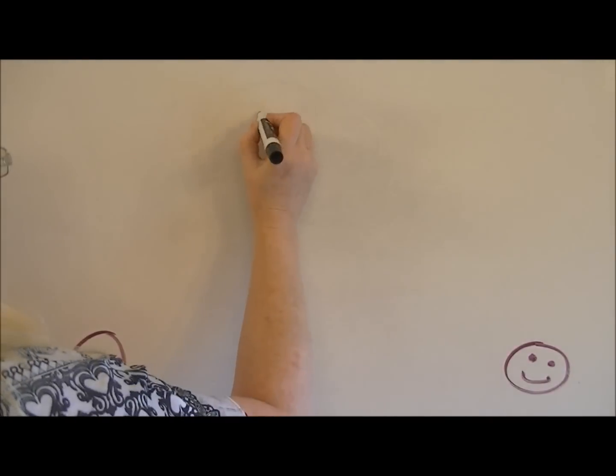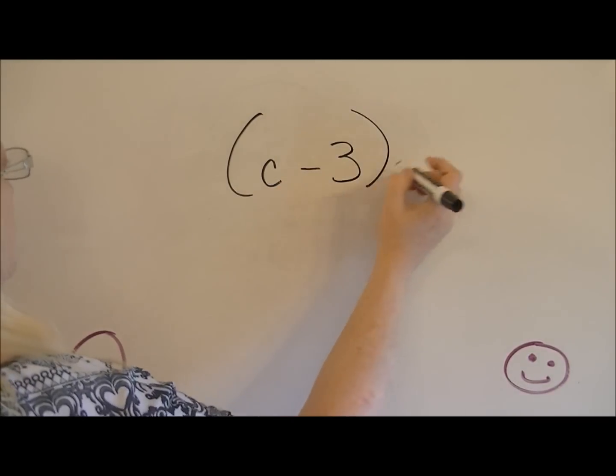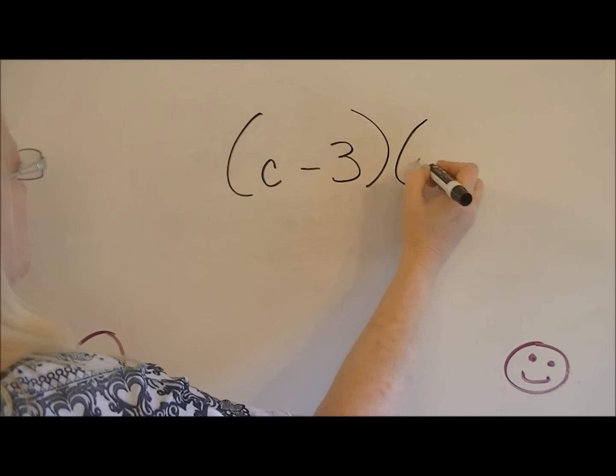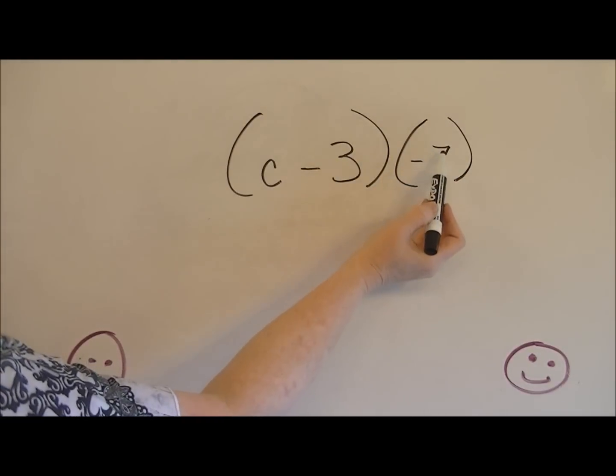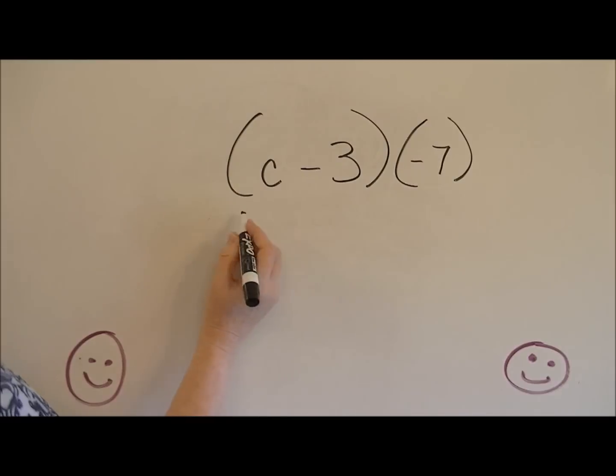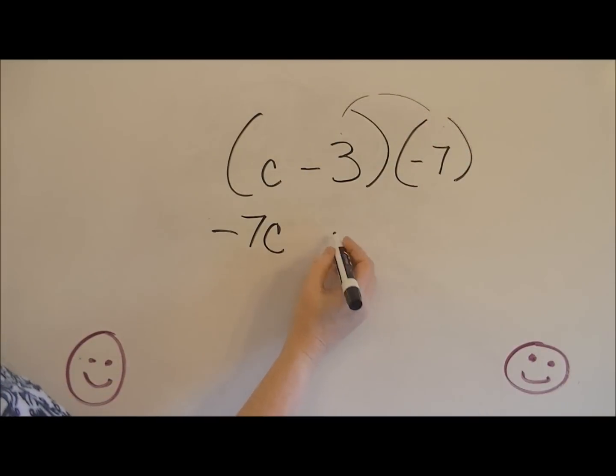Let's say that you had c minus 3 times negative 7. Again, I'm going to multiply the negative 7 times c, which is negative 7c. Then I'm going to multiply negative 7 times negative 3. Two negative numbers, when you multiply them, you're going to have a positive answer. So your answer is negative 7c plus 21.